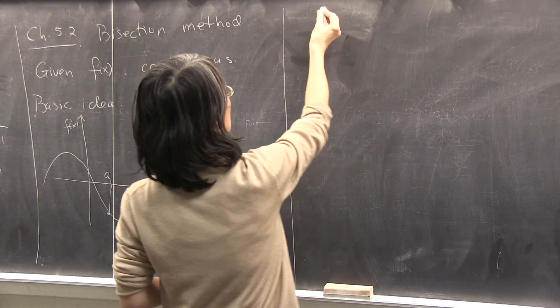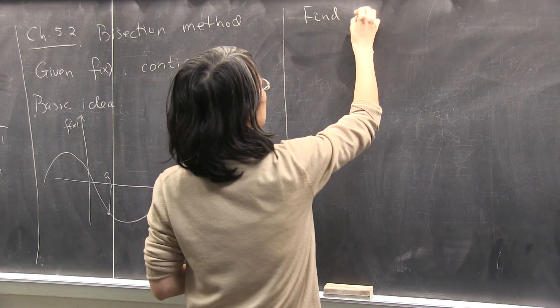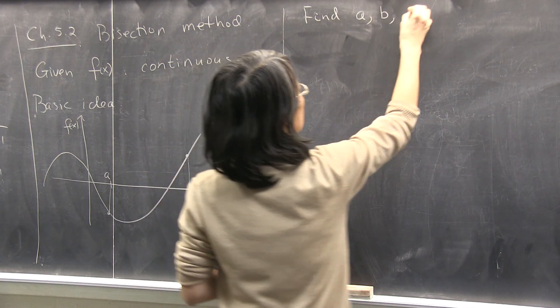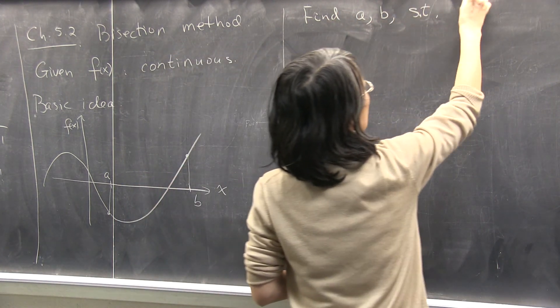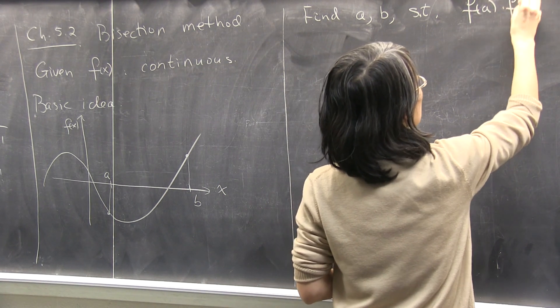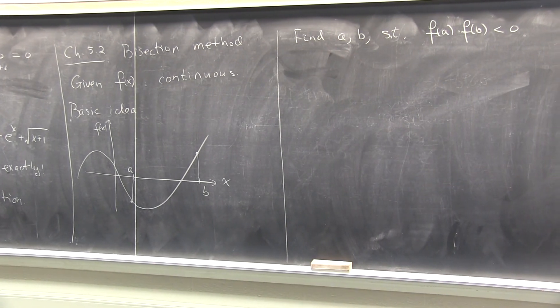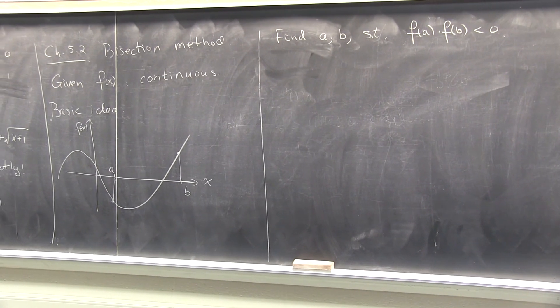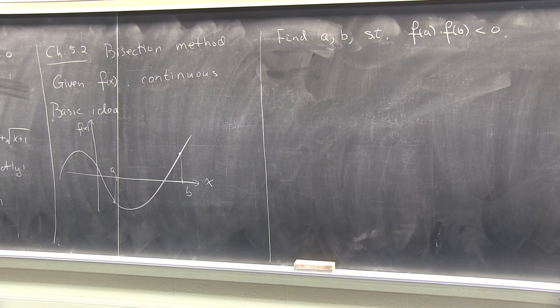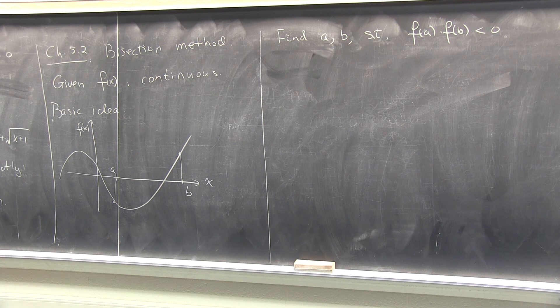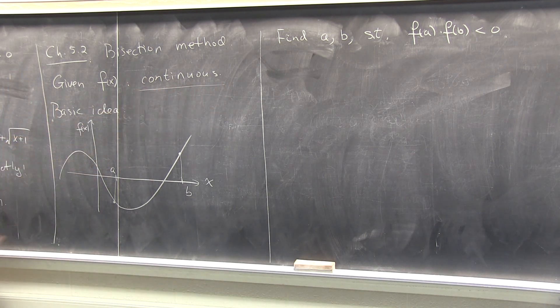So let's say I managed to find a and b such that f of a times f of b is less than zero. What can I conclude? What's special about this interval that I just found? There must be zero somewhere between them. Why could you say that? Yeah, because it continues, right?